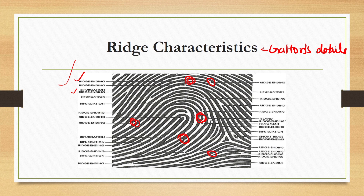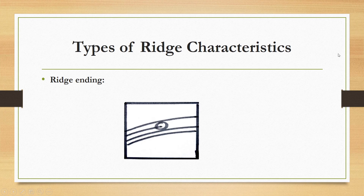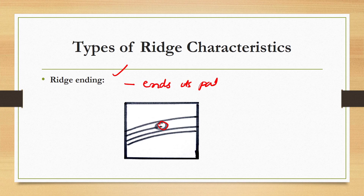Francis Galton first noticed that the ridges on the fingers do not path in line without breaking, and he identified numerous ridge characters to support fingerprint identification. The first ridge characteristic is ridge ending — a ridge which abruptly ends its path. Ridge endings occur very abundantly in finger impressions.